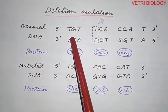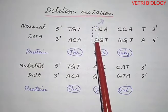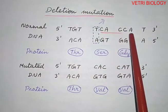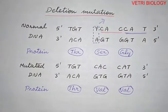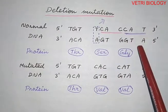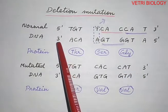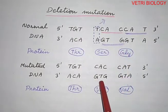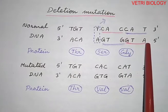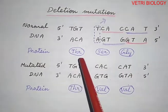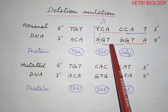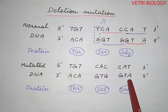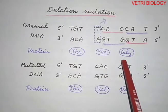In a deletion mutation, a thymine-adenine base pair is deleted from the normal DNA strand. As a result, the reading frame shifts. The template strand that originally produced serine and glycine now reads differently — for example, the codons shift to GTG and GGT, producing different amino acids. This shows how even a single base pair deletion can completely alter the protein product through a frame shift.